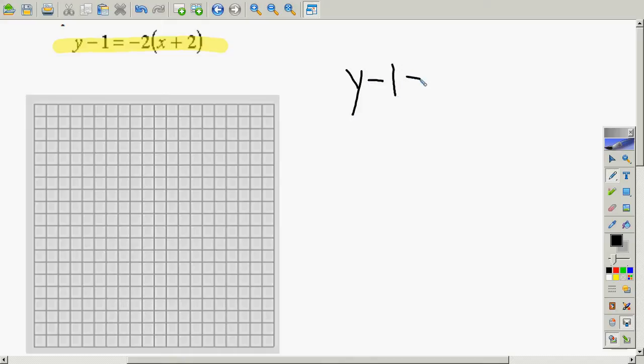So we have y minus 1 equals 2(x + 2). And you can't put that in your graphing calculator because it's not in function form right now. So we've got to do a little bit of work here. You have to take this minus 1 and drag it to the other side. When you drag it to the other side, we have to change the sign to a plus 1.